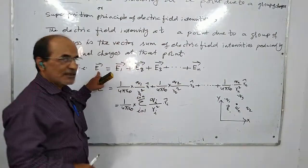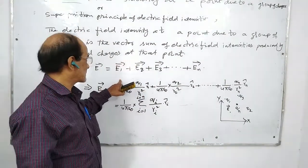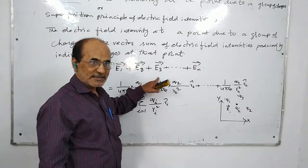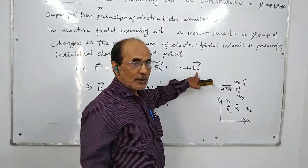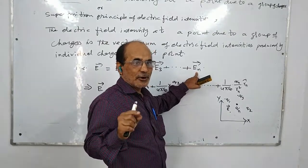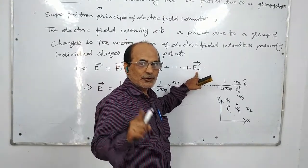It is written as E vector equals E1 vector plus E2 vector plus E3 vector plus E4 vector and so on to En vector. So, we know that E equals 1 by 4πε₀, Q by R².